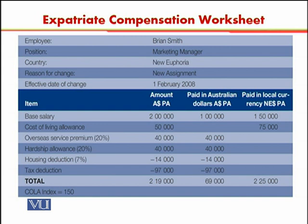You can see there are four columns in this worksheet. The first column is for the item. The second column is the total amount in Australian dollars per annum. The third column is the amount to be paid in Australian dollars per annum. The fourth column is the amount to be paid in the local currency of New Euphoria per annum. The compensation package is divided into both local currency and parent country currency.